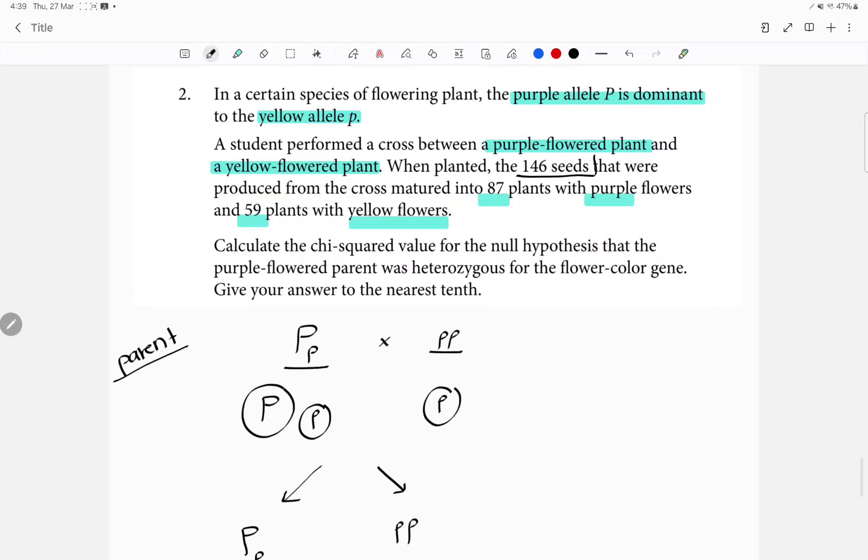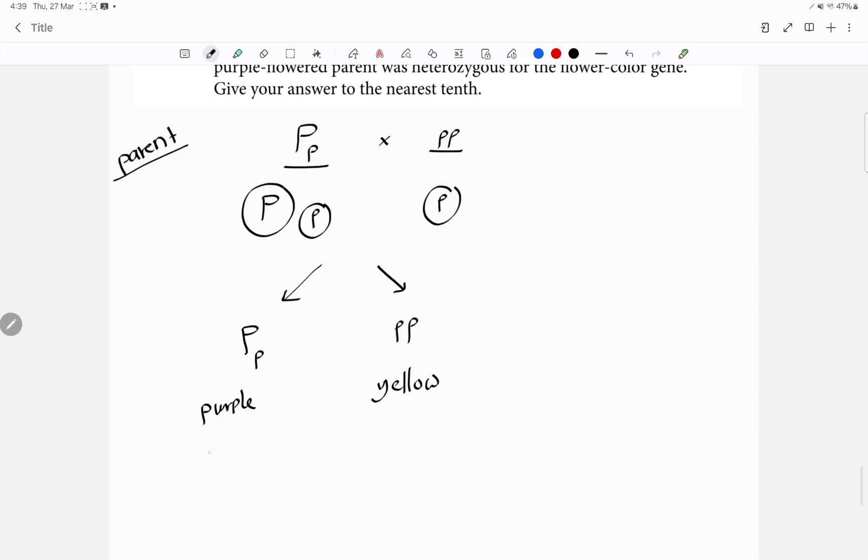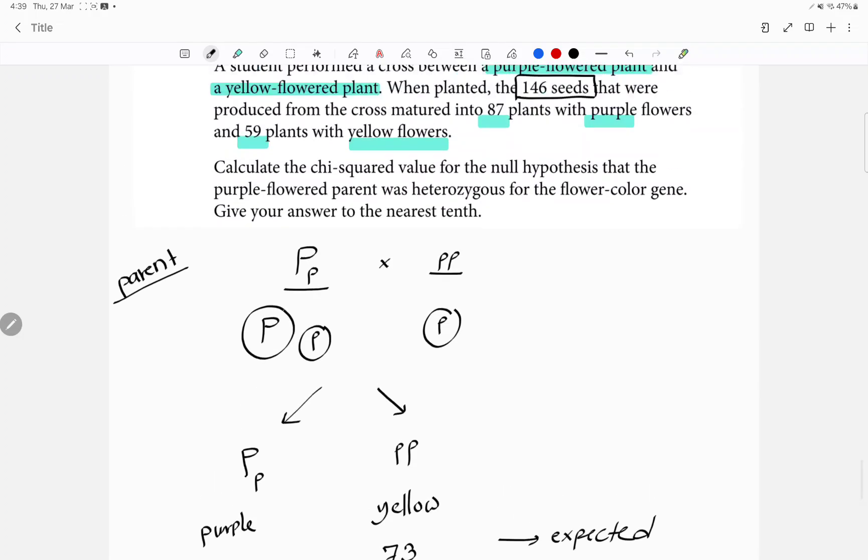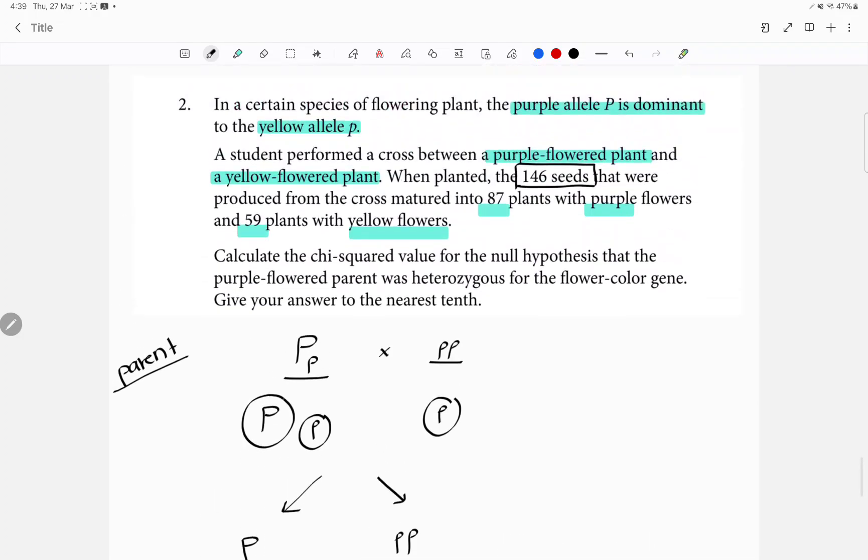That means if you had 146 seeds, half will be purple, which is 73, half will be yellow, which is the other 73. We call these numbers the expected numbers because this is how much we expect.